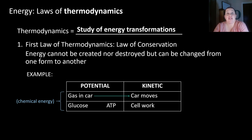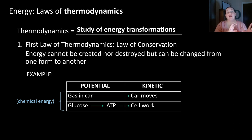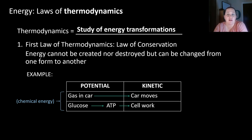So gas in the car gets converted so that the car can actually move, allowing for a different type of energy. In a cell, glucose is transformed into the chemical ATP, and that ATP is then used to do cell work. We go from potential energy to kinetic energy — it just takes more steps when we talk about cells. This goes from chemical energy to mechanical or movement energy.